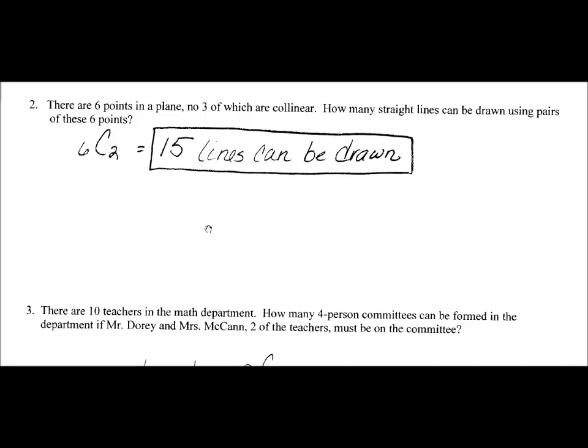In example number two, it says there are six points in a plane, no three of them are collinear. Remember that collinear points mean that they're in a straight line, so there are only two points anywhere that form a straight line. How many straight lines can be drawn using pairs of these points? A line requires two points in order to be drawn, and there are six points altogether, so we have to choose two of the six. 6C2 gives me 15. There's 15 possible lines that I can draw.